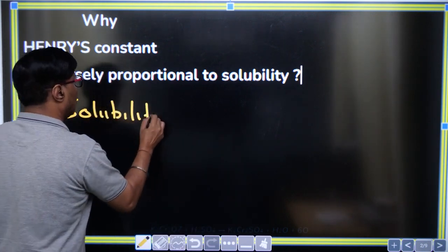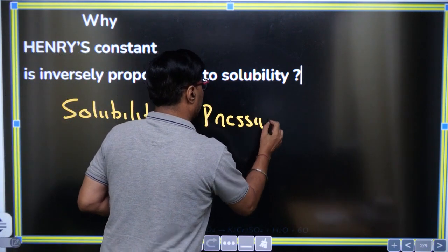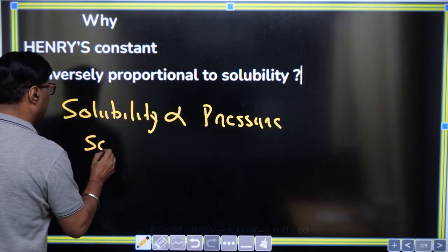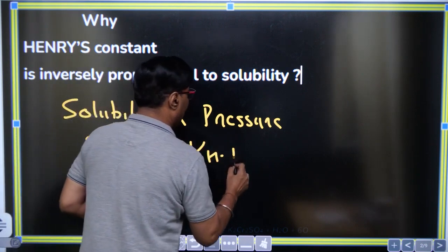Solubility is directly proportional to pressure. And this proportionality is nothing but solubility is directly proportional. If I remove the proportionality, that can be written as KH into P.